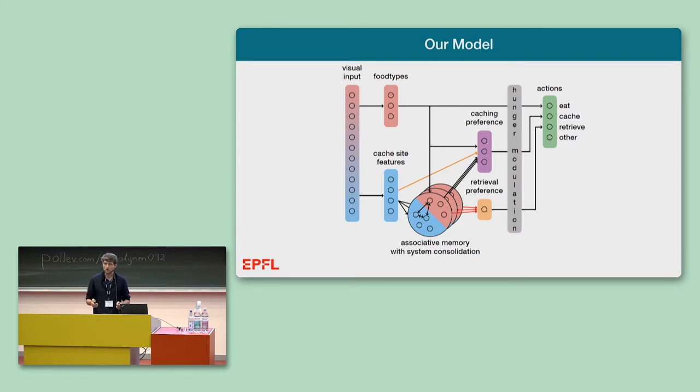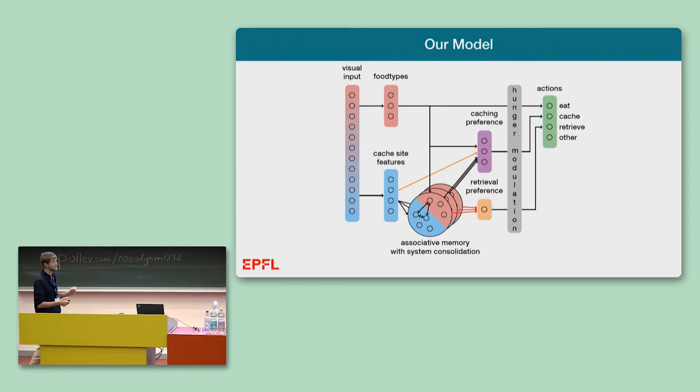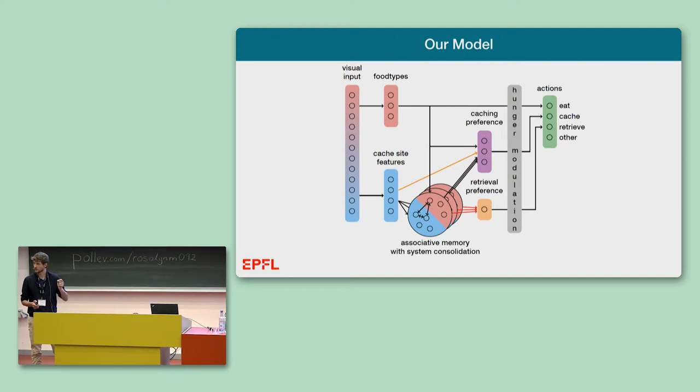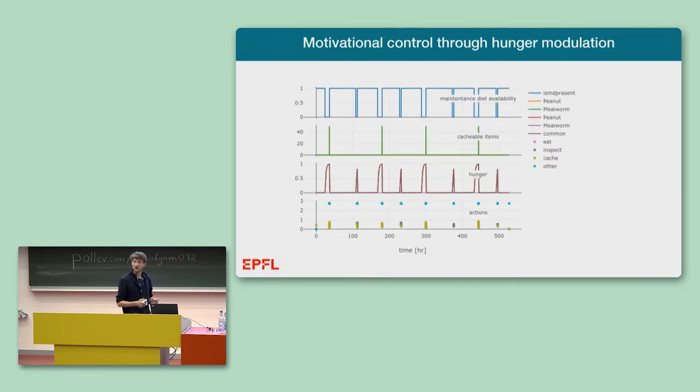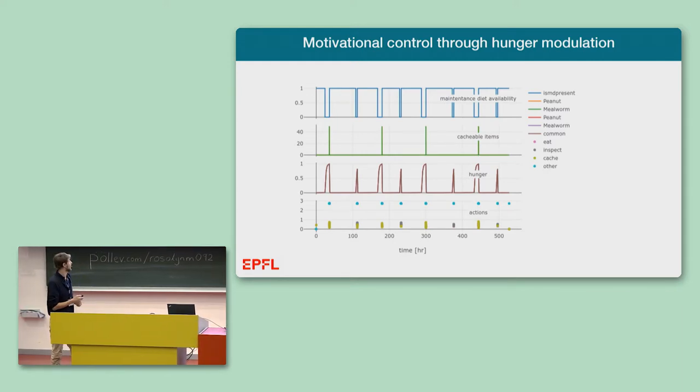I will now walk you quickly through a brief description of these three internal states: the hunger variable, the associative memory, and the plastic weights. I will illustrate the hunger modulation with this example. This is an example trace from one of the simulated birds on one of the experimental protocols. In the top row, you see that the experimenter chose to remove maintenance diet from time to time and add cacheable and eatable food items in the second row.